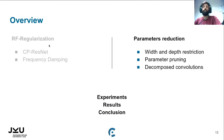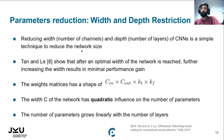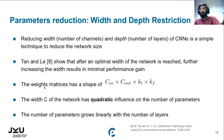Now we will talk about parameter reduction. The first method is width and depth restriction. Reducing the width, which is the number of channels, and depth, which is the number of layers, is a simple way to reduce network size. As shown in the EfficientNet paper, after reaching the optimal width, increasing it further results in only minimal performance gain. The weights matrix in a CNN has the shape of C_in × C_out × filter size over time and frequency. Since C appears twice, width has a quadratic influence on the number of parameters, while adding layers grows the parameter count only linearly.